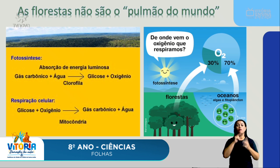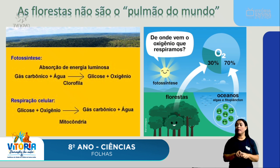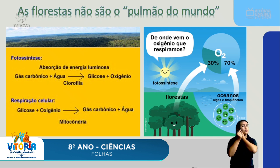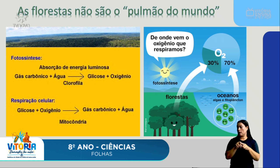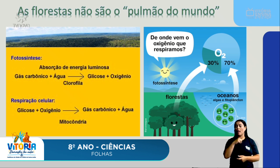De onde vem o oxigênio que respiramos? No nosso planeta, apenas 30% do oxigênio vem das florestas, e 70% vem das algas e fitoplânctons, que são seres muito pequenininhos — cerca de quase mil vezes menor do que um milímetro. Seres microscópicos que, dada a grande extensão de mais de 70% de água nos oceanos, produzem 70% do oxigênio do nosso planeta.